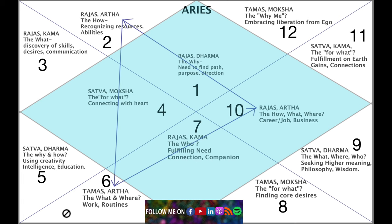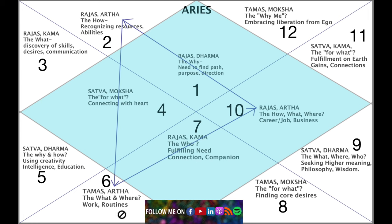Then you move on and take that to the sixth house — the house of daily work and routines. Once you recognize your resources and abilities, you bring them to your daily work and make it very structural. Virgo is a creative earth sign: you are discovering what work routines suit you. Virgo is all about developing habits, work patterns, and smarter ways to work. It's a highly creative earth sign. The Aries ascendant needs to get really structural and smart about their daily work — creative routine planning and creative task planning.